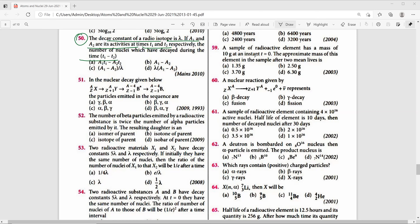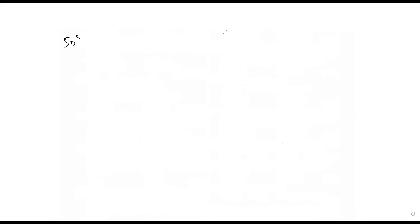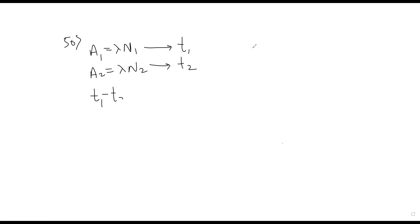For question 50: we know A1 = λN1 at time T1, and A2 = λN2 at time T2. Therefore, the number of nuclei decayed during the time interval T1 to T2 is N1 minus N2, which equals (A1 minus A2) divided by lambda.